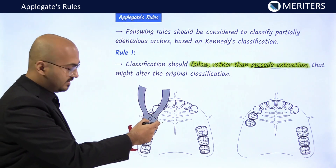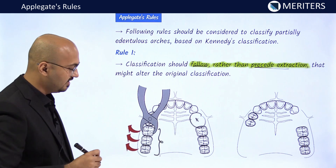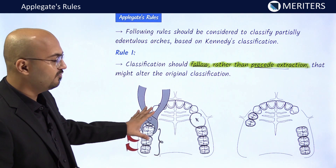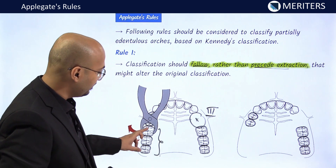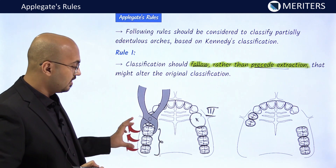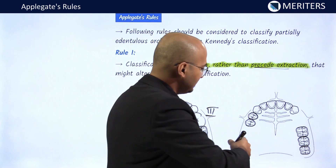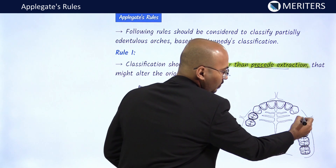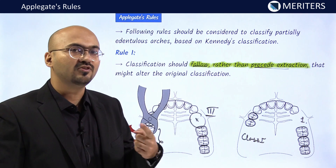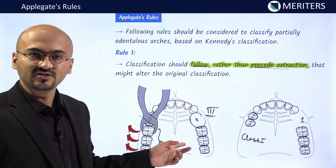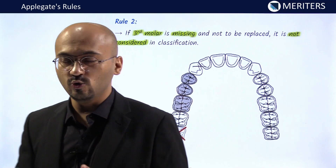According to Applegate's Rule Number 1, classification should follow rather than precede the extraction that might alter the original classification. For example, if certain teeth are indicated for extraction, classifying before extraction may give Kennedy's Class 3, but after extraction the classification changes. The most posterior extent of the arch determines the primary classification, so after extraction the case may become Class 1 Modification 1. That is why classification should happen after extraction.